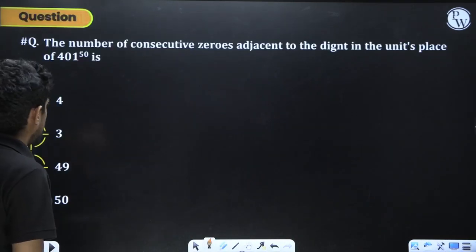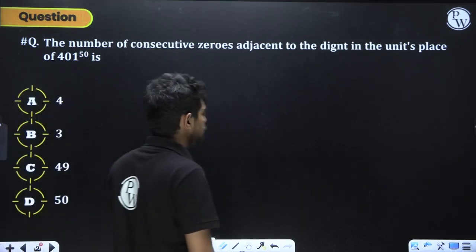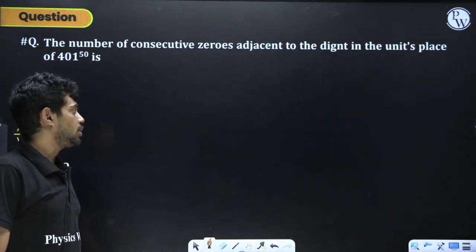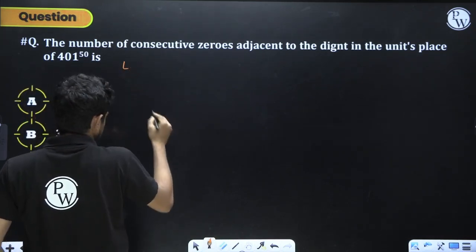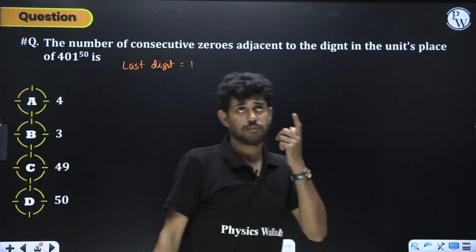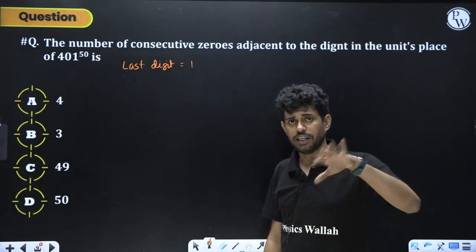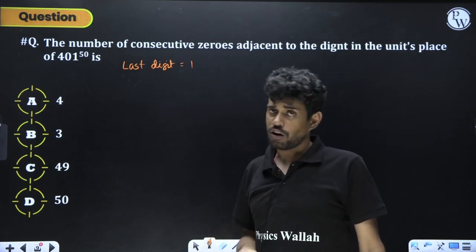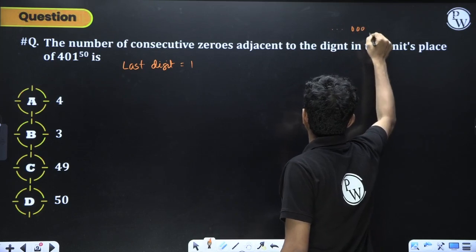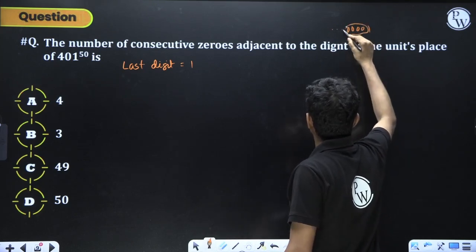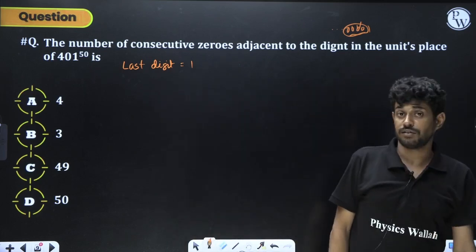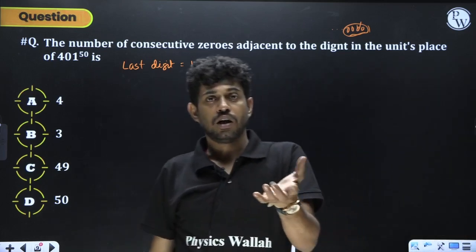The next question: the number of consecutive zeros adjacent to the digit in the unit place of 401^50. The unit digit is always 1 (since 1^n = 1 always). The question asks how many zeros appear immediately before the unit digit in the expansion.